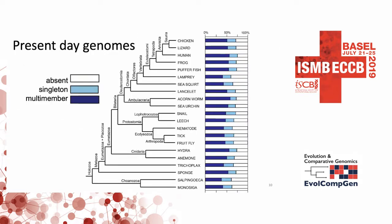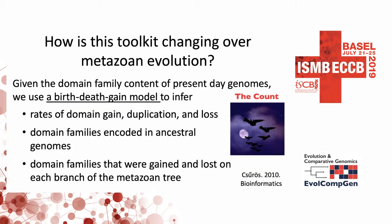This shows a summary of that metazoan domain content from Superfamily. In the bar graph, for each genome I'm showing the percentage of those 1,300 domain families that are either absent in white, present in a single copy in light blue, or present with multiple copies in dark blue. Given the domain content of present-day genomes, we use a birth, death, and gain model to infer rates of domain gain, duplication, and loss, the domain families encoded in ancestral genomes, as well as families that were either gained or lost on each branch of the species tree.